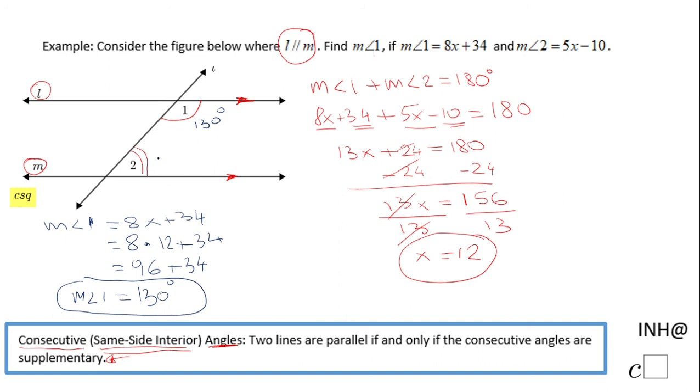This one, based on the property I just mentioned, they are supplementary, should be 50 degrees. You can use the same process of replacing x with 12, and you will see you should get 50.